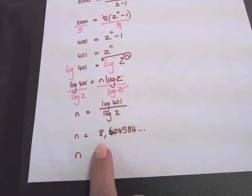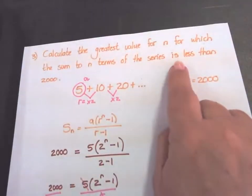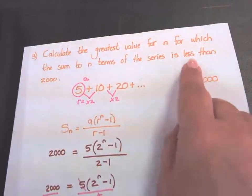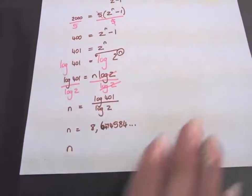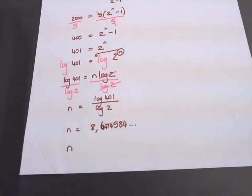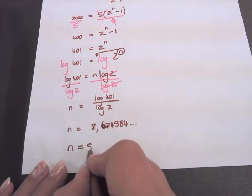So n will be 8.647. If the sum is 2000, but the series must be less than 2000. So what is the first term number less than 8.647? Eight. So n will be equal to 8.